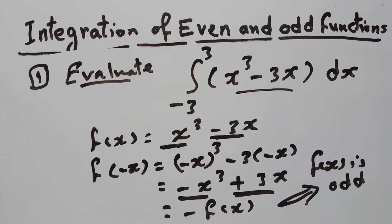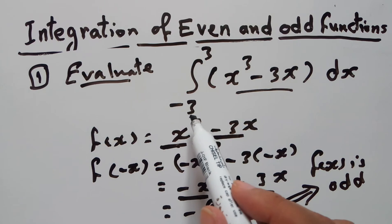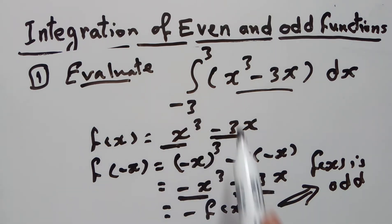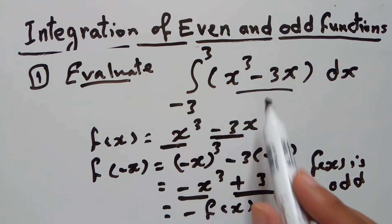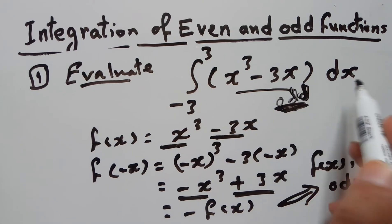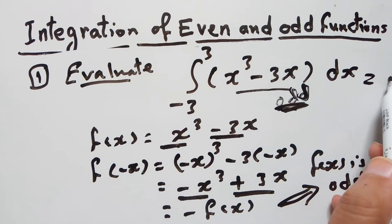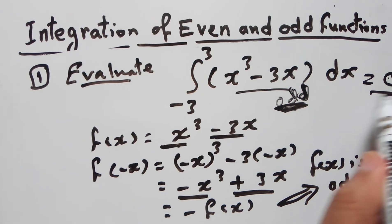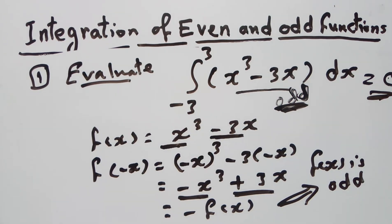Since f(x) is odd, by the theorem the integral from -3 to 3 of (x³ - 3x) dx equals 0 — without needing to compute the integration step by step.